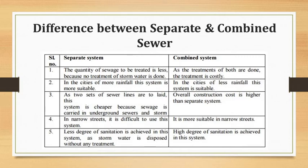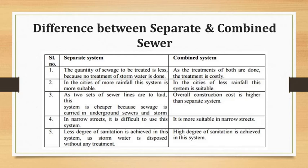Regarding choking problems, due to the smaller size of sewers in the separate system, they are more likely to get choked. In the combined system, due to the larger size of sewers, there are very few chances of choking. Regarding ventilation, the separate system's smaller sewers can be ventilated with ease, while the combined system's larger sewers are more difficult to ventilate.